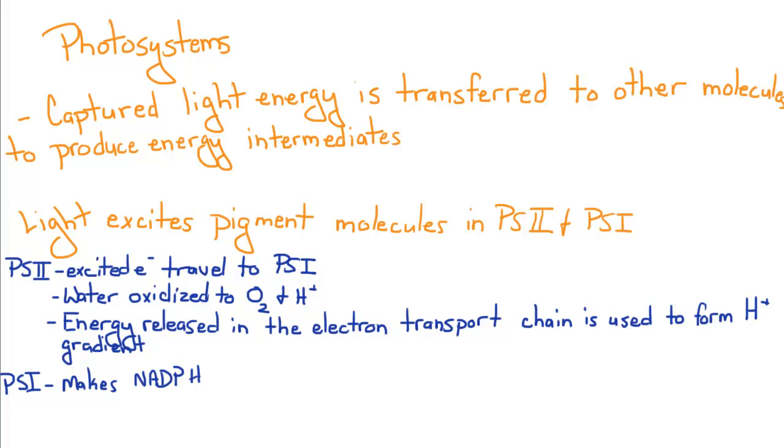And the energy released in the electron transport chain, which transfers the electrons from photosystem II to photosystem I, and eventually to NADPH, is also used to form, to contribute to the hydrogen ion gradient.